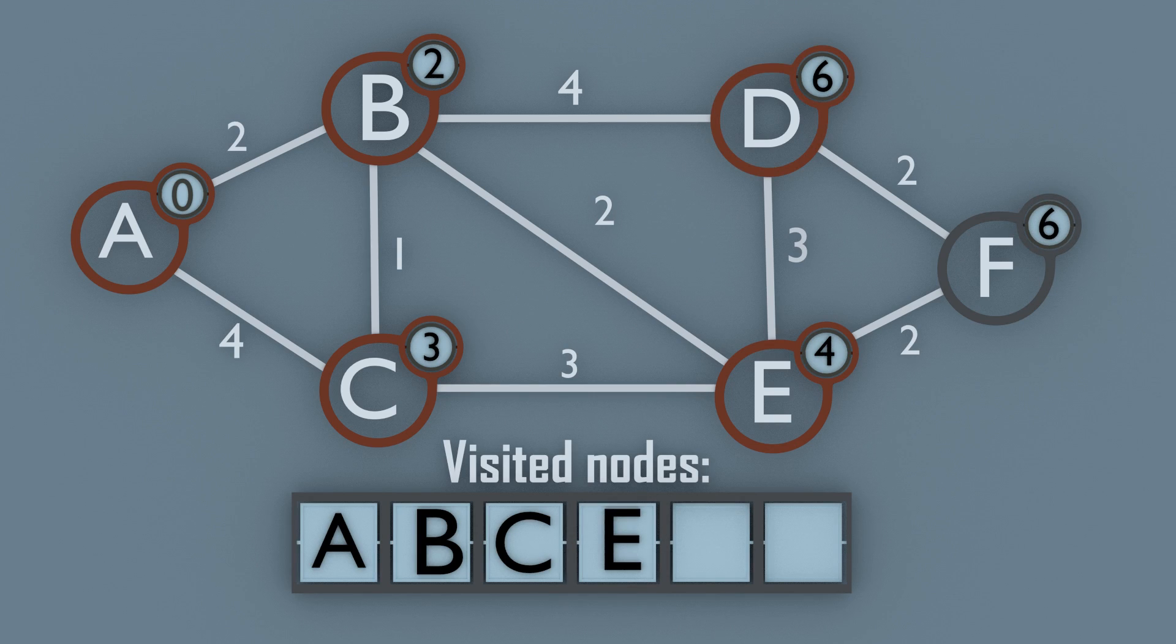Finally we visit node D. But since none of the distances are less than the weight of the node, no weights are updated. At node F there are no unvisited nodes left, so we just set node F as visited.